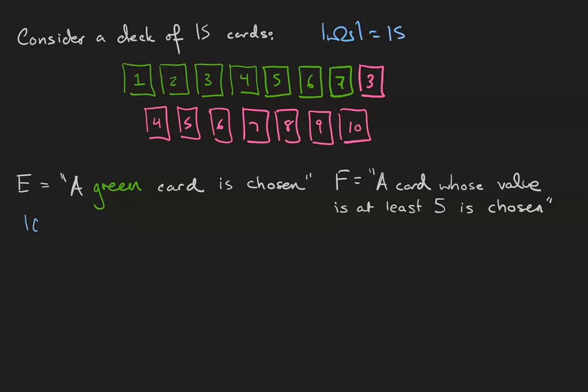The cardinality of set E is 7, because there are 7 green cards. The cardinality of set F is the number of cards whose values are at least 5, and there are 9 of those. Therefore, the probability of E is 7 over 15, and the probability of F is 9 over 15.